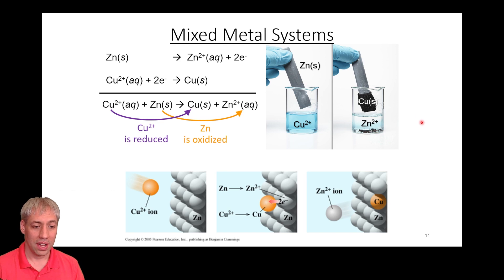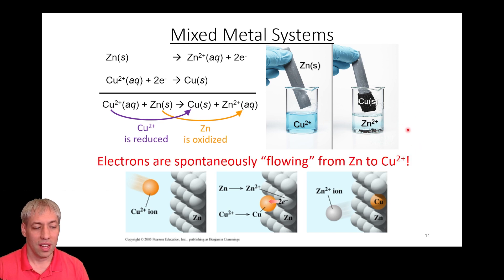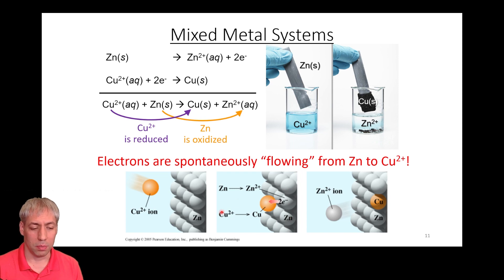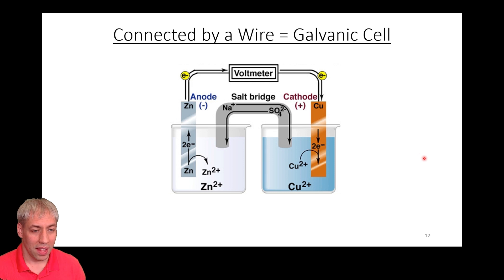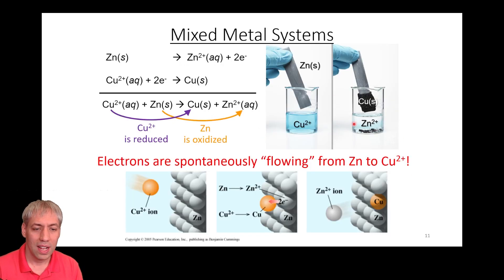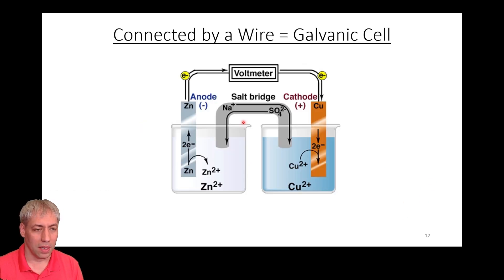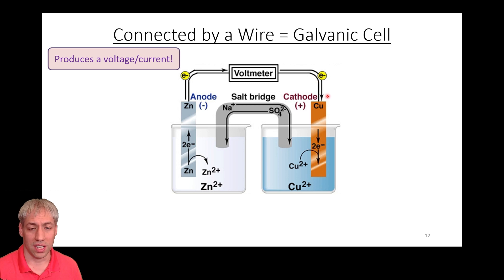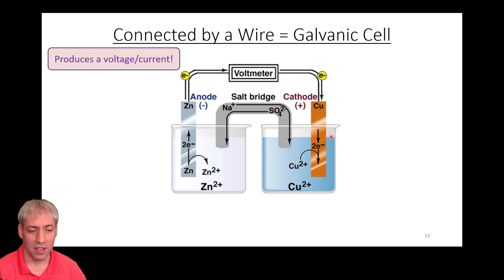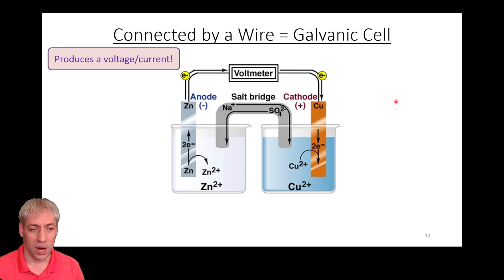That brings us to galvanic cells. Instead of putting the reactants together in one solution, we separate the copper and zinc reactions but connect them by a wire and a salt bridge. This is a galvanic cell — using compartmentalized reactions to move electrons across a wire and get voltage out of the cell. This is what produces current and voltage we can utilize in devices, effectively creating a battery.